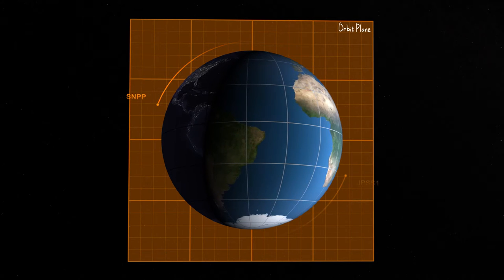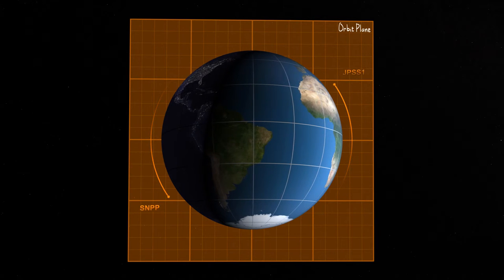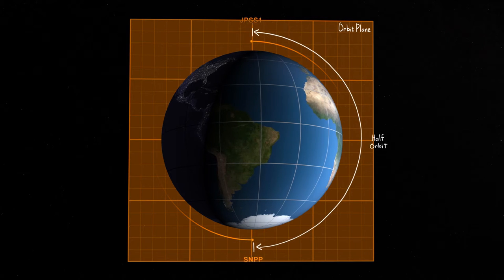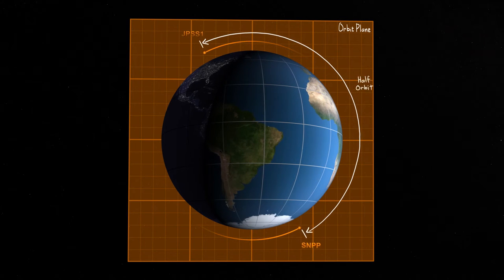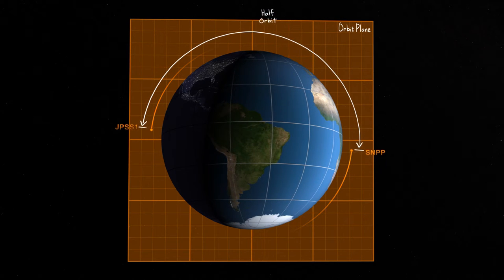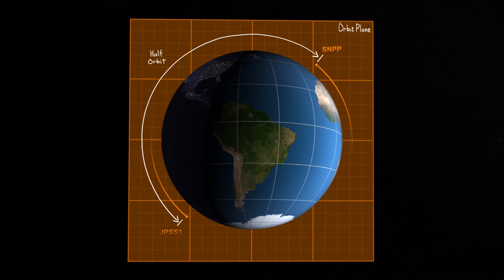The second spacecraft in this series, called JPSS-1, will be launched and inserted in the same orbital plane as SNPP. JPSS-1 will be placed one half orbit ahead of SNPP. This means JPSS-1 will be about 50 minutes ahead of SNPP in the same orbit, allowing important overlap in observational coverage.